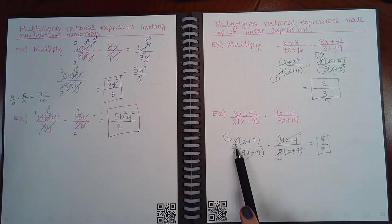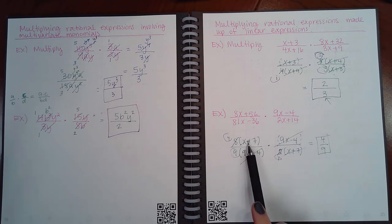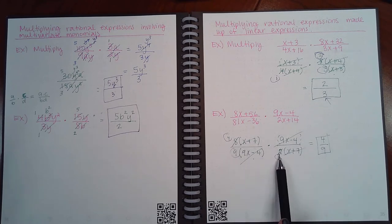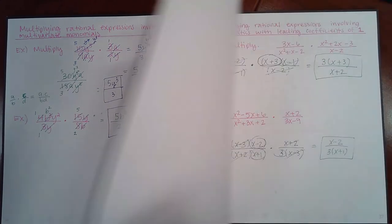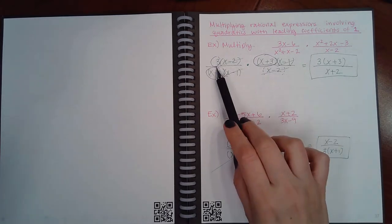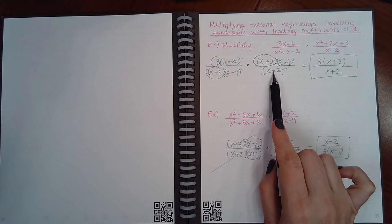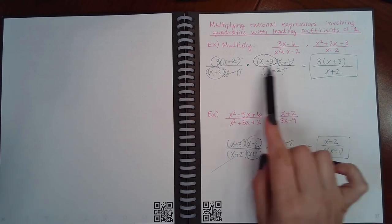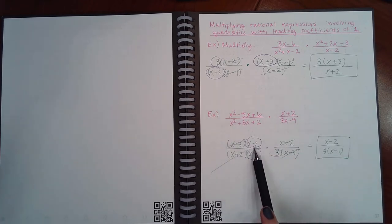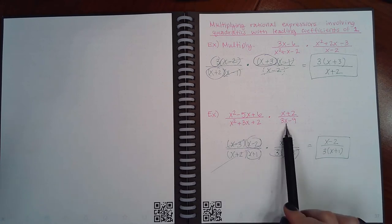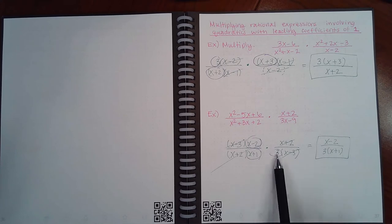In another example, factor 8 from one numerator and 9 from one denominator; cancel (x + 7)s and (9x − 4)s; reduce 8 and 2 by 2, giving 1 and 4. Result: 4 / 9. In the next problem, factor out a 3, factor binomials, cancel (x − 2)s and (x − 1)s, leaving 3(x + 3) / (x + 2). Finally, factor binomials throughout, cancel (x − 3)s and (x + 2)s, leaving (x − 2) / (3(x + 1)).